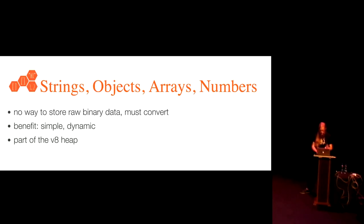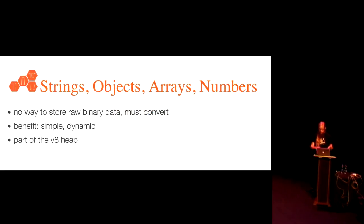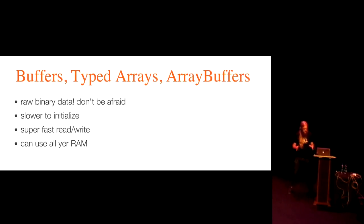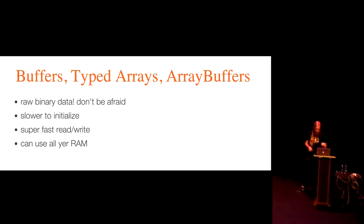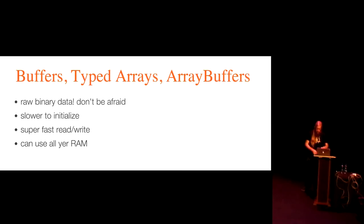These things are inside the V8 heap — in the small hexagon. Objects are usually pretty small, so you can have millions of objects within a gigabyte of memory. As of the last few years, there are ways to store raw binary data. You have buffers in Node, and in the browser — and also in Node since they're on the same engine — you have typed arrays and array buffers. The raw binary data: don't be afraid of them. You can now read binary formats without converting to non-binary data structures, which is really fast.